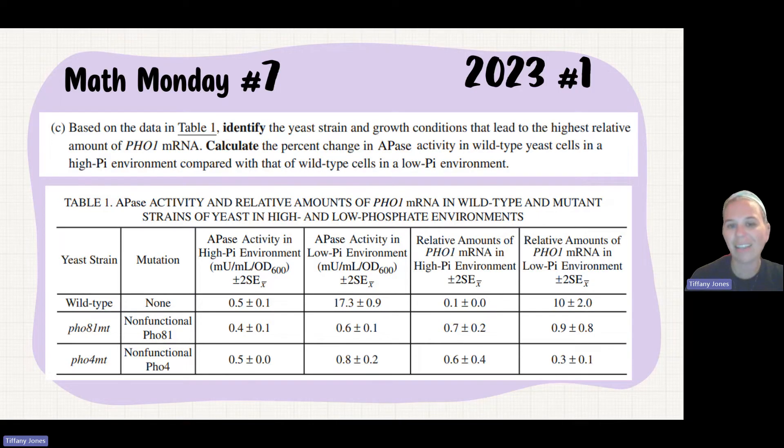So what do you have to do? I have to calculate the percent change in APase activity in wild type yeast cells in a high phosphate environment compared to those in a low phosphate environment. When I'm looking at this, 12 different data points here, I need to figure out which two am I looking at.